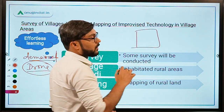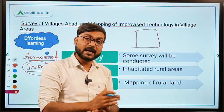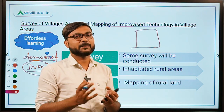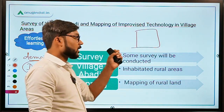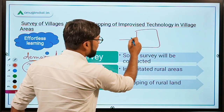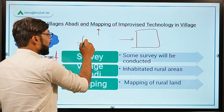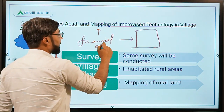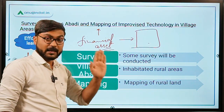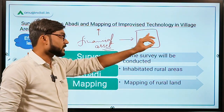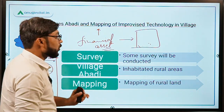Basically, property cards will be given to rural land owners. The property card will work like a registration paper. Before this scheme, that land could not be used for anything, but now after the launching of this scheme, this land can be used as a financial asset. By showing the property card, the owner can go to a bank and take a loan against that land. So now these lands can be used as a financial asset.